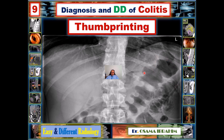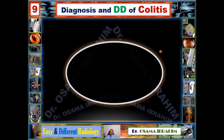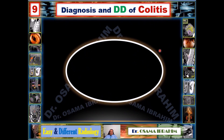Here is another image showing thumb printing. Notice the haustral pattern: when thickened and projected inside the lumen of the colon, it causes a decrease in the diameter or caliber of the colon. These projections representing the thickening are due to thumb printing, indicating colitis. After recognizing thumb printing on the abdominal X-ray, we move to identifying the cause.